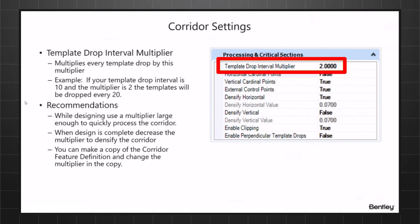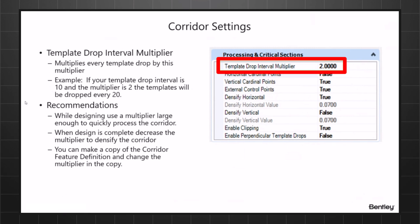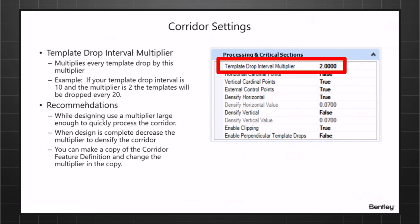The recommendation while designing and laying out your corridor is to use a multiplier large enough to quickly process it. Don't put in something like 100 — if your template drop interval is 10 and you use 100, you're dropping a template every 1,000 feet. When your design is complete, set it back to 1 for denser templates. You can also copy the feature definition, change the multiplier in the copy, and then just switch feature definitions on the corridor.